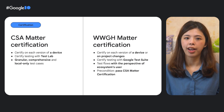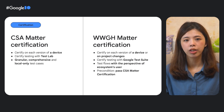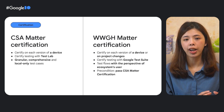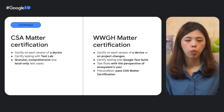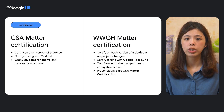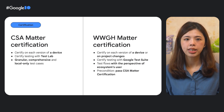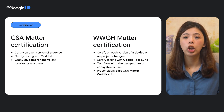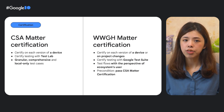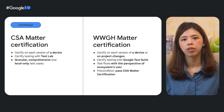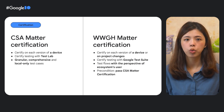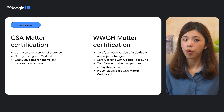While CSA certifies on each version of the device, on Google's side we certify on each version of the device or on project changes. CSA certified testing is done with a Test Lab, and Google certified testing is done with a Google test suite. In terms of testing scope, CSA focuses more on granular, comprehensive, and local-only test cases. Test flow on Google is designed from the perspective of the ecosystem's user. Last but not least, to pass Works with Google Home Matter certification, it is required to pass CSA Matter certification first.